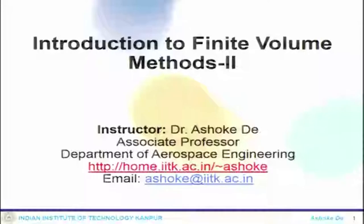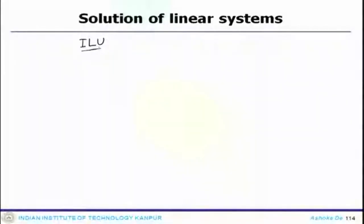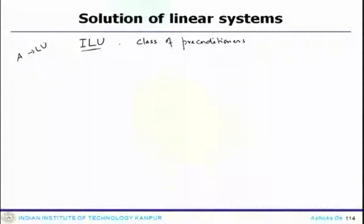Welcome to the lecture on finite volume method. What we stopped at in the last lecture is ILU factorizations. This is a class of factorizations or decompositions that is very handy and can be used for iterative solvers — specifically, incomplete LU factorizations. This is a class of preconditioners which are popular for the iterative process. Decomposing a sparse matrix into the product of lower and upper triangular systems leads to substantial fill-in, which we have already seen while talking about direct solvers.